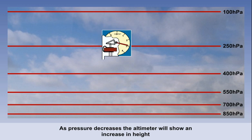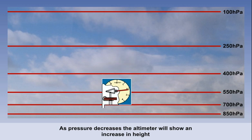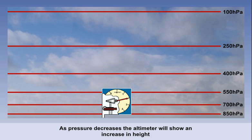Conversely, when the aircraft descends through the atmosphere, the pressure increases and the pointer moves anti-clockwise, showing a decrease in height.